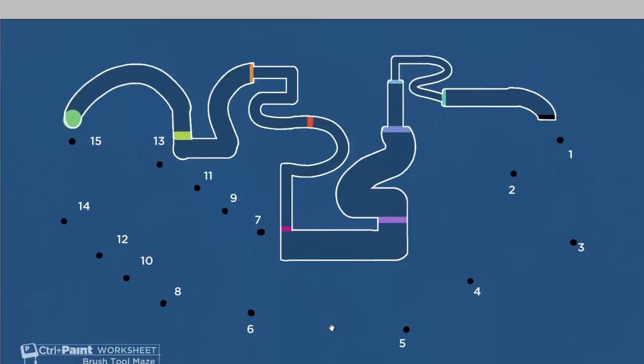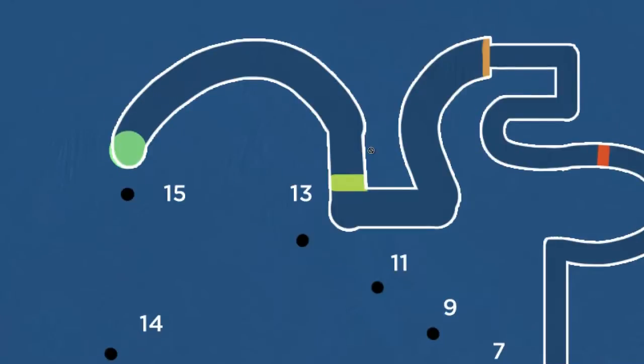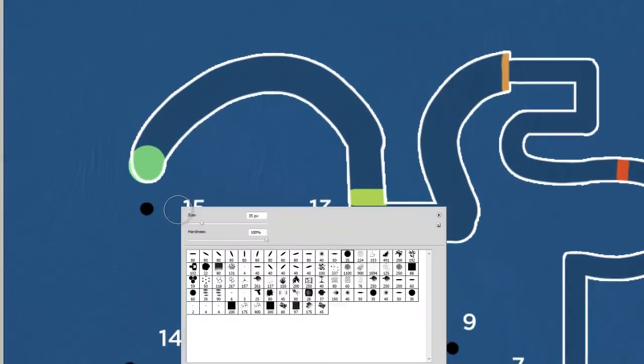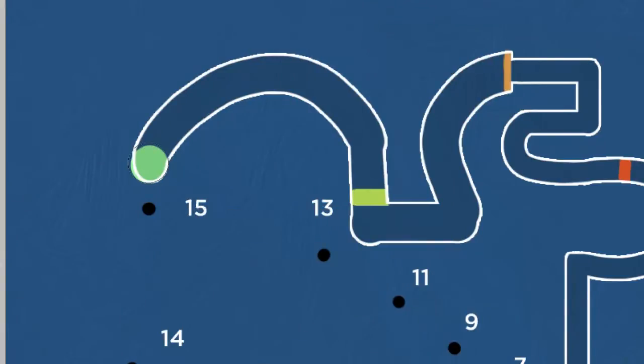So from this point forward it's keyboard shortcuts only. And for the first half of the maze my goal is going to be to match the color and the diameter. So pick a basic round brush, sample the color, and match the diameter using the keyboard shortcuts.